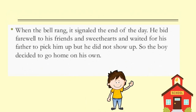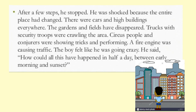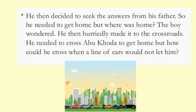When the bell rang, it signaled the end of the day. He bid farewell to his friends and sweethearts and waited for his father to pick him up. But he did not show up. So the boy decided to go home on his own. After a few steps, he stopped. He was shocked because the entire place had changed. There were cars and high buildings everywhere. The gardens and fields had disappeared. Trucks with security troops were crawling the area. Circus people and conjurers were showing tricks and performing. A fire engine was causing traffic. The boy felt like he was going crazy. He said, How could all this happen in half a day between early morning and sunset? He then decided to seek the answers from his father, so he needed to get home. But where was home? The boy wondered.